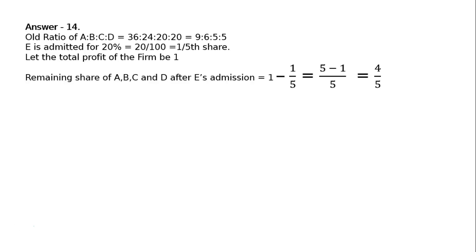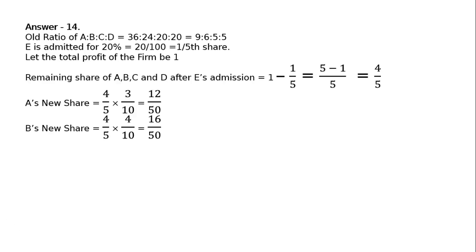The remaining share of A, B, C, and D after E's admission is equal to 1 minus 1 upon 5, that is equal to 4 upon 5. A's new share: 4 upon 5 multiplied by 3 upon 10 — because they are sharing in the new ratio 3:4:2:1 among A, B, C, D — giving 12 upon 50. Likewise, B's new share: 4 upon 5 multiplied by 4 upon 10, that is equal to 16 upon 50.